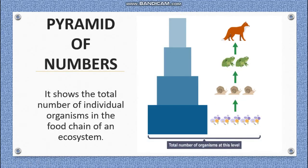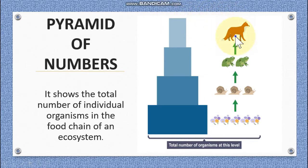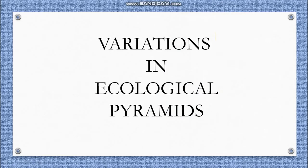The pyramid of numbers shows the total number of individuals at each trophic level in the food chain of an ecosystem. We count the organisms — producers, primary consumers, secondary consumers, and tertiary consumers — and form a pyramid accordingly. So again, it is normally a pyramid shape. However, there are certain variations in ecological pyramids, which we need to study in detail.